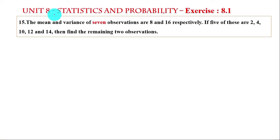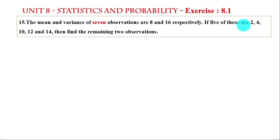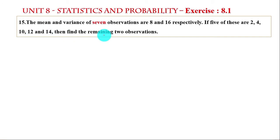Assalamu alaikum students. Unit 8, Exercise 8.1, question number 15. The mean and variance of 7 observations are 8 and 16 respectively. If 5 of these are 2, 4, 10, 12, and 14, then find the remaining 2 observations.